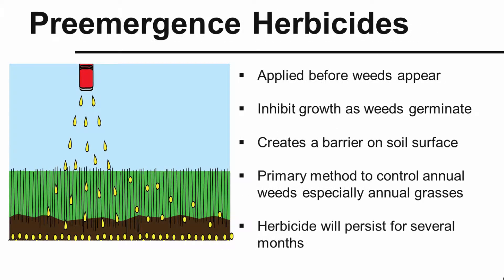Pre-emerge herbicides are applied before the weeds have emerged or appeared. These herbicides inhibit growth as weeds germinate — they create a barrier on the soil surface, and as those weed seeds germinate, they hit the barrier and are controlled. This is our primary method for controlling annual grassy weeds in turf grass, ornamental beds, and so forth. The herbicide typically persists for several months because weed seed germination happens over a period of time, not all at once.